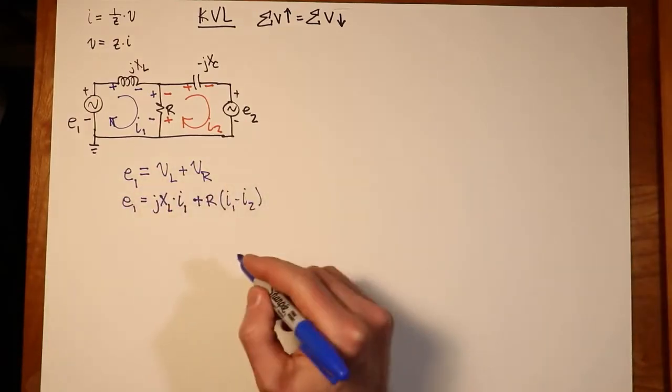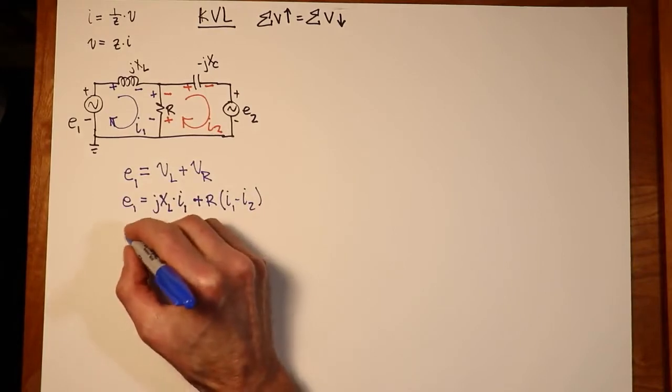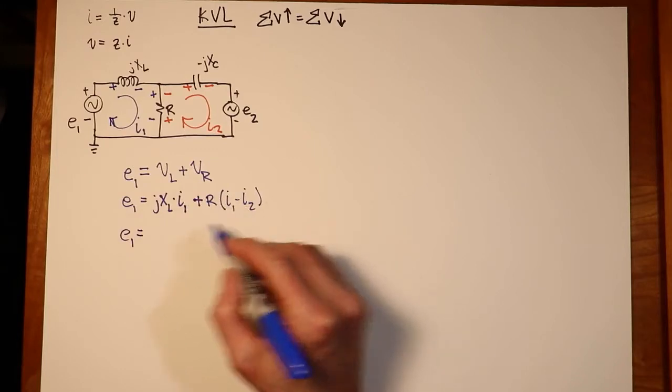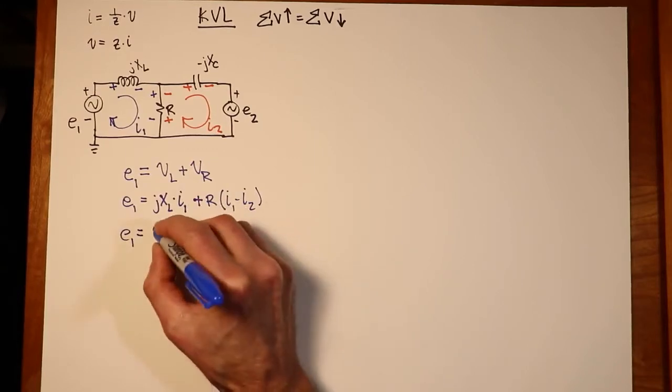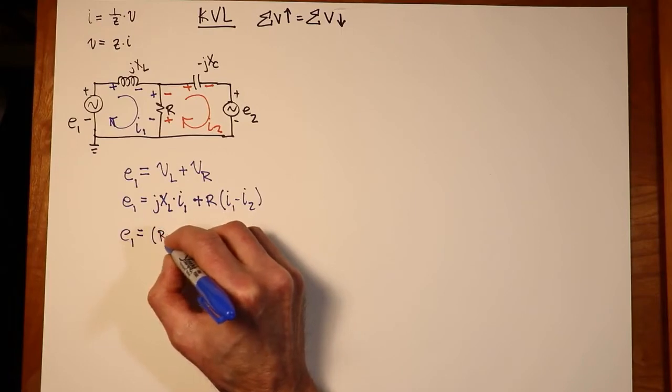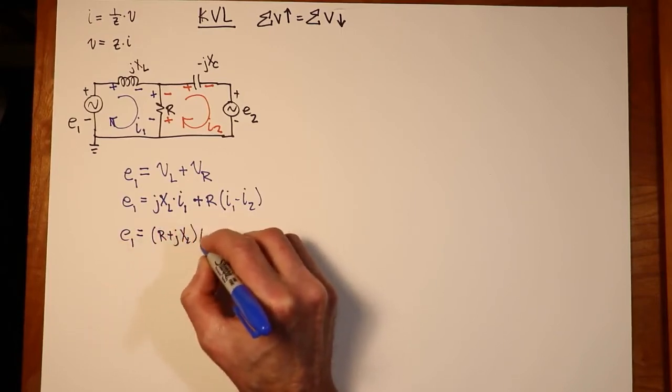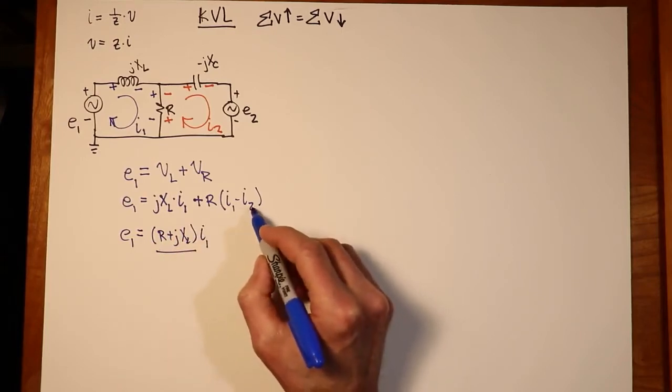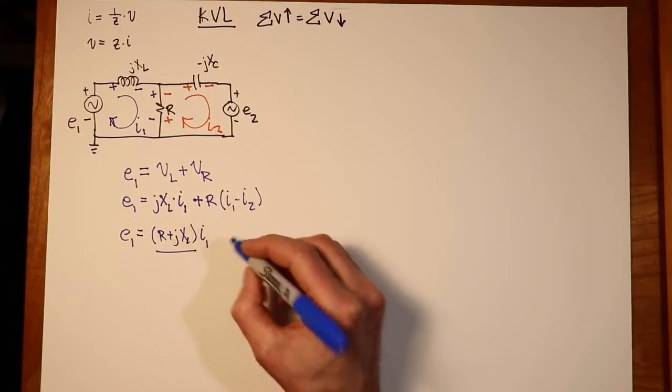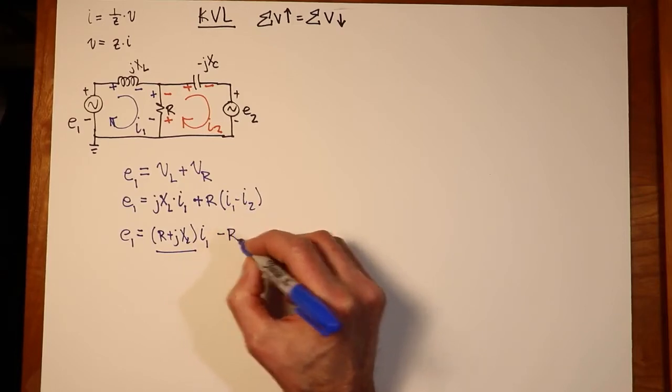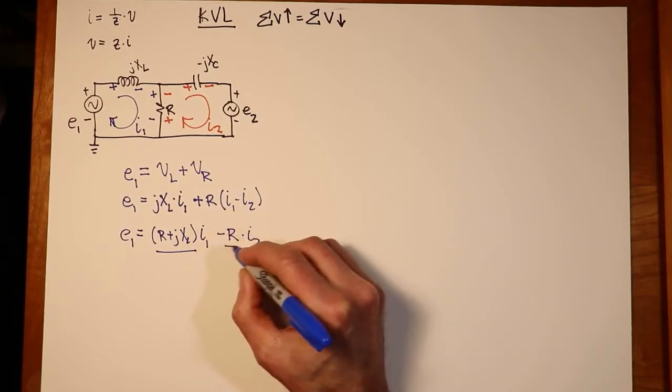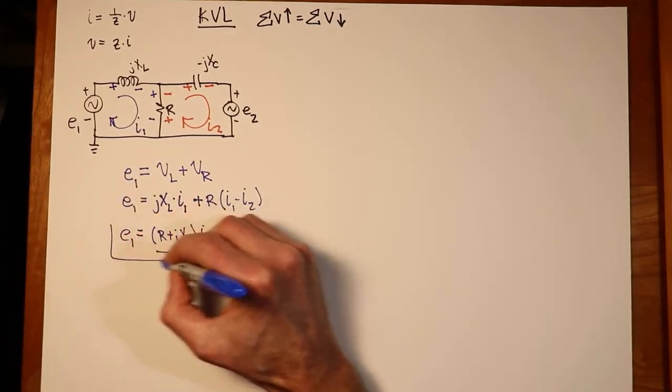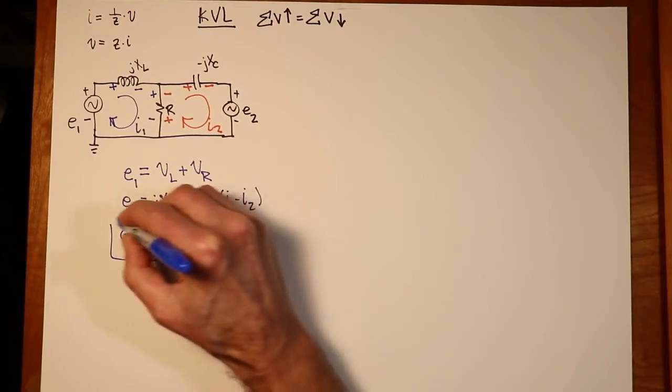So there's our first equation. We could now simplify this and say, okay, E1, what are my coefficients for my I1's? I've got a JXL and I've got an R, so let me stick those together. So this is R plus JXL times I1. And then I have my I2 coefficient, negative I2 times R. So that's a negative R times I2. That's my first equation.